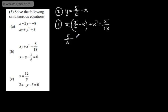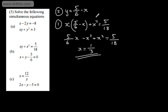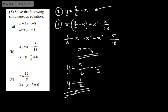Multiplying through, we've got 5 over 6 times x, minus x squared, plus x squared, equals 5 over 18. The minus x squared and plus x squared cancel. So we've got 5 over 6 times x equals 5 over 18, which works really nicely. The 5s cancel, giving x equal to 6 over 18, which is 1 over 3. Substituting back in, y equals 5 over 6 minus 1 over 3, which is 5 over 6 minus 2 over 6, giving y equal to 1 half. In this case, we only have one solution: x equals one third and y equals one half.